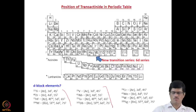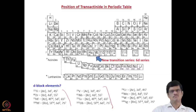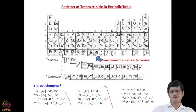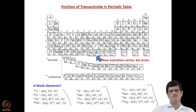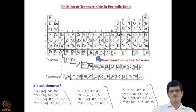Similarly for the +5 oxidation state: vanadium (Z=23), niobium (Z=41), tantalum (Z=73), and Dubnium (Z=105) have similar d³ s² electronic configurations. For the +6 oxidation state, chromium (Z=24), molybdenum (Z=42), tungsten (Z=74), and Seaborgium (Z=106) also have similar d⁵ s¹ electronic configurations. The second and third transition series elements are considered as homologues of the transactinides.